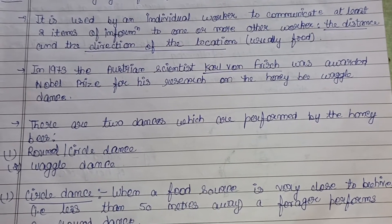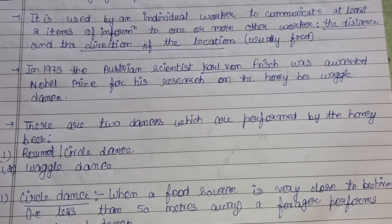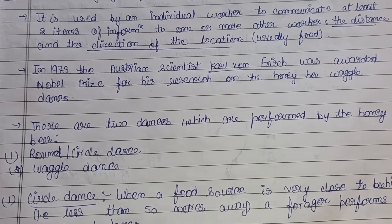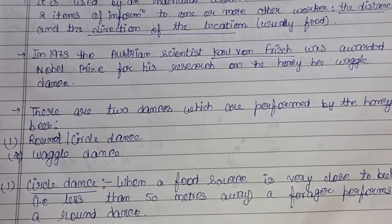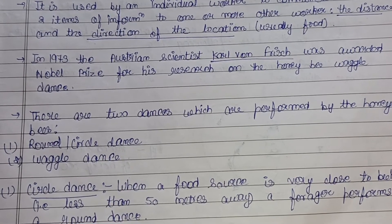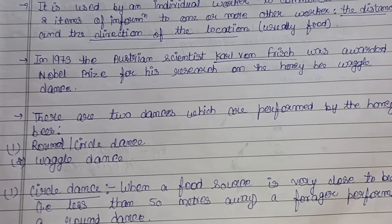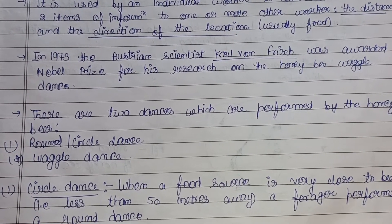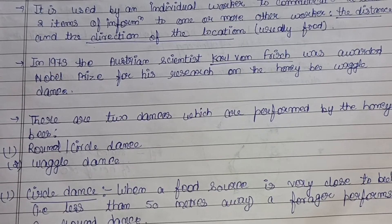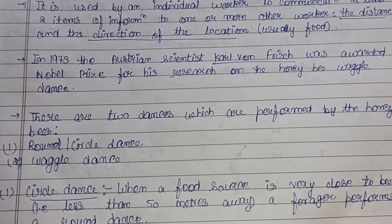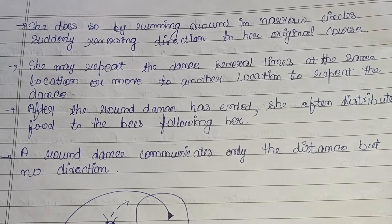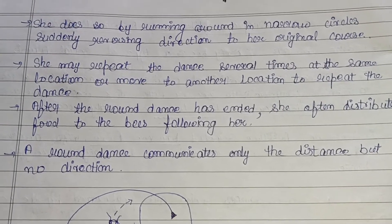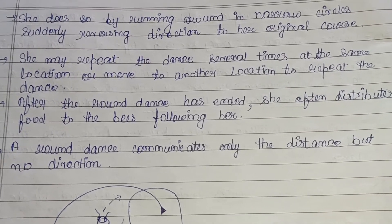The round dance is performed when a food source is very close to the beehive — less than 50 meters away. A forager performs this round dance; that is, the worker bee which searches for food performs the round dance when the food is within 50 meters of the beehive. The worker bee does so by running around in narrow circles and suddenly reversing direction back to her original course.